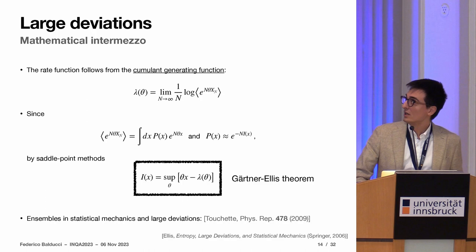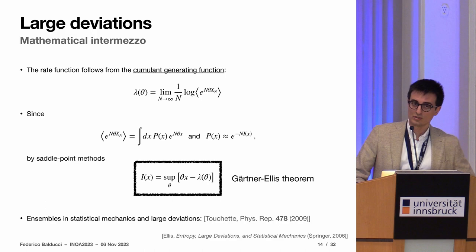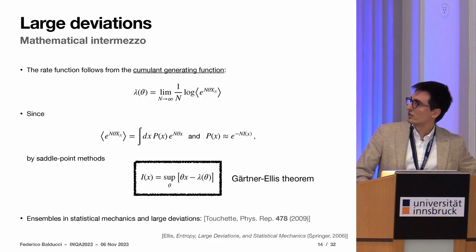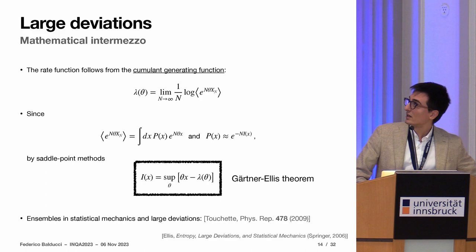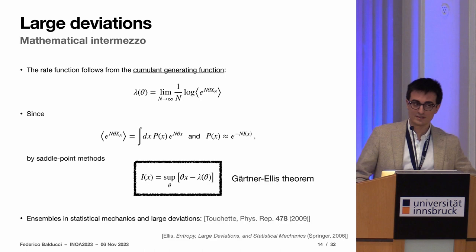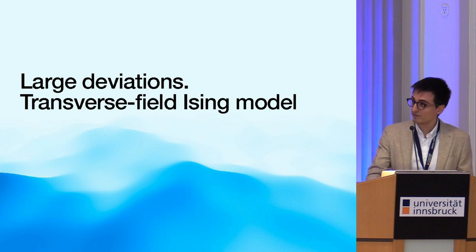How to access this large deviation rate function? What one usually does is to use the Gartner-Ellis theorem, which is a sort of microcanonical-canonical equivalence. This is a sort of free energy of the random variables xn. Once you compute it, you do a Legendre transform and you get the rate function, which is a sort of microcanonical entropy. We don't have to learn new instruments, you just have to use basic statistical mechanics interpreted in a mathematical framework to do all the computations.